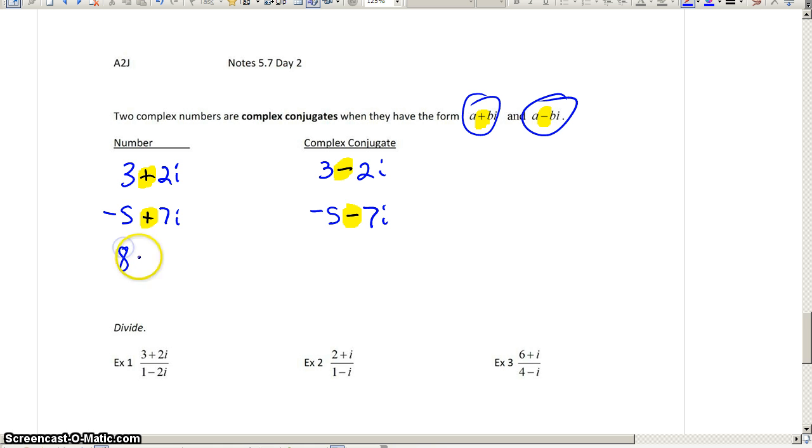Very similarly, if we start with a subtraction like 8 minus an i, the complex conjugate would be 8 plus an i.